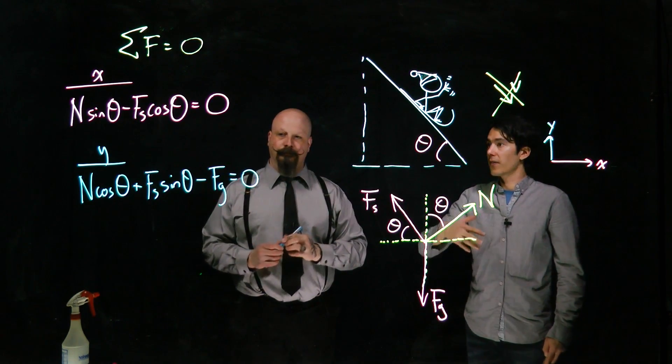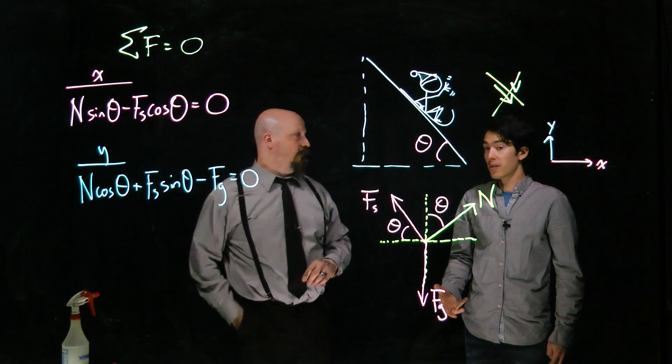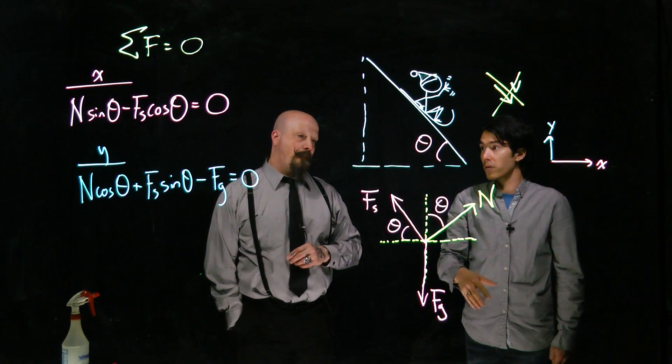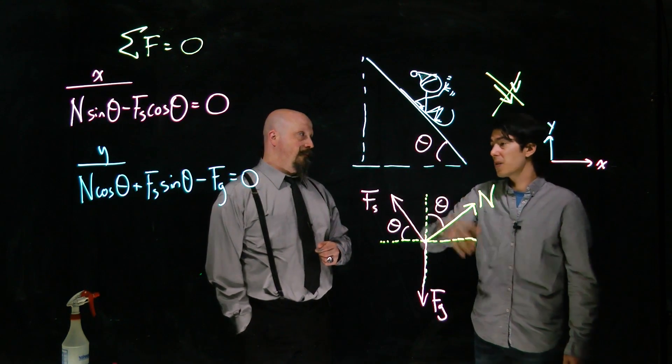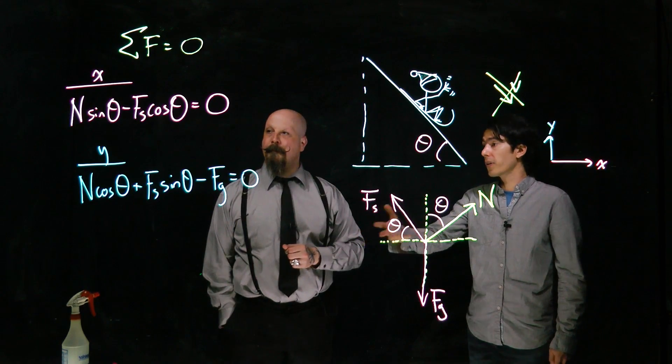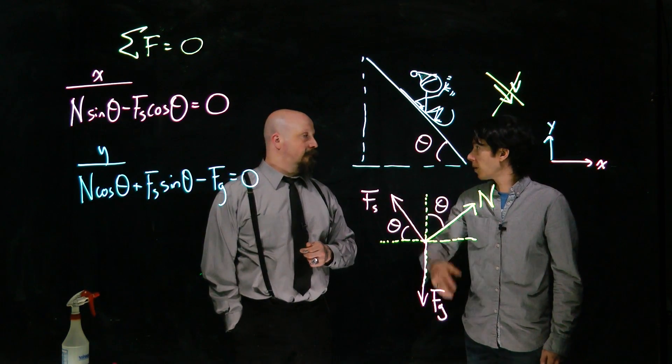So Newton's second law says that if there is no acceleration, the net force is zero, and we've broken things into components to show that these two expressions are consistent with Newton's laws. And from this point, we could use those to solve for an unknown force. Maybe perhaps we're after the friction in this problem.